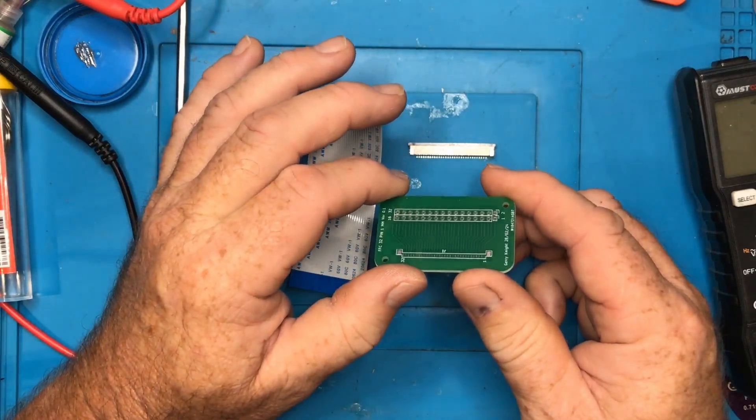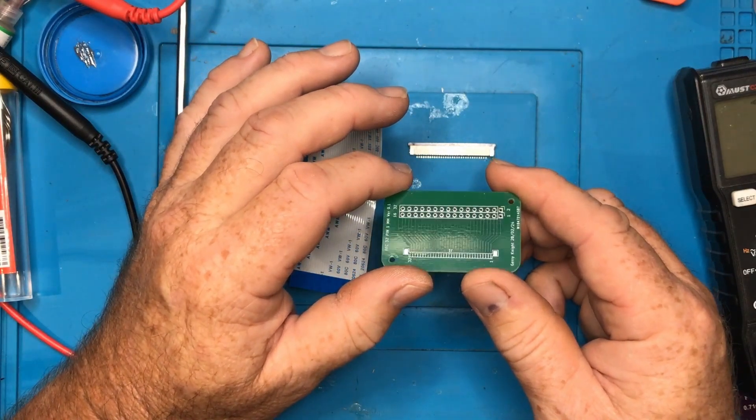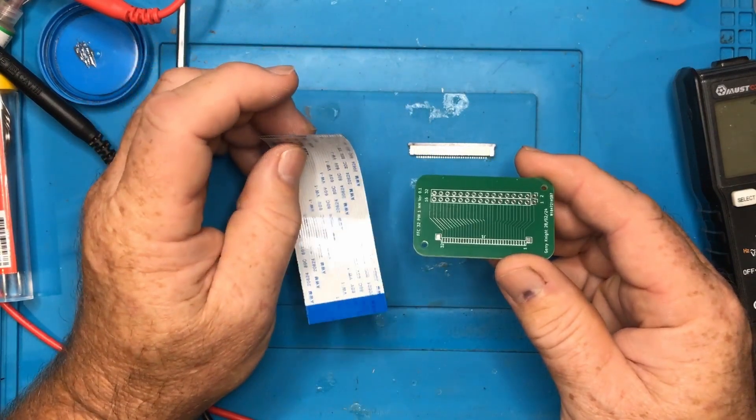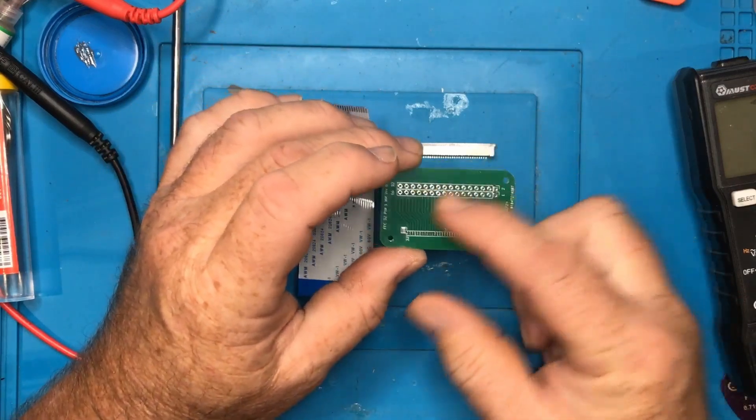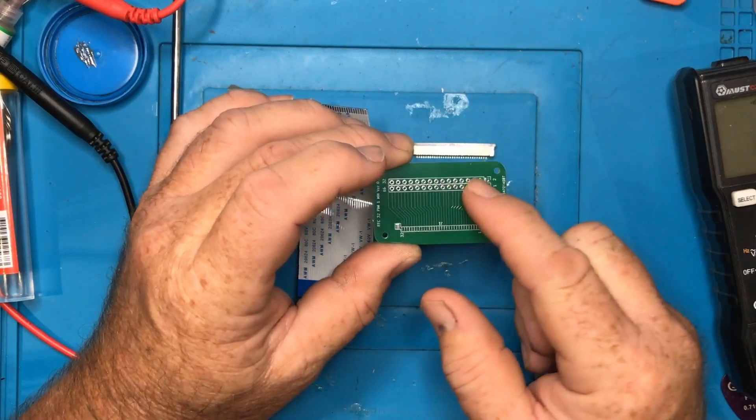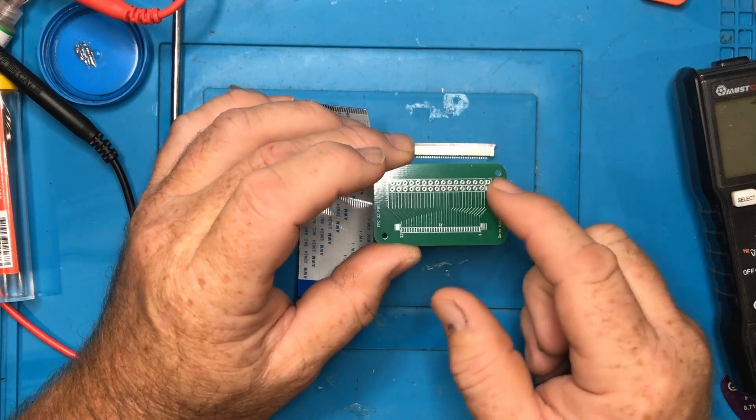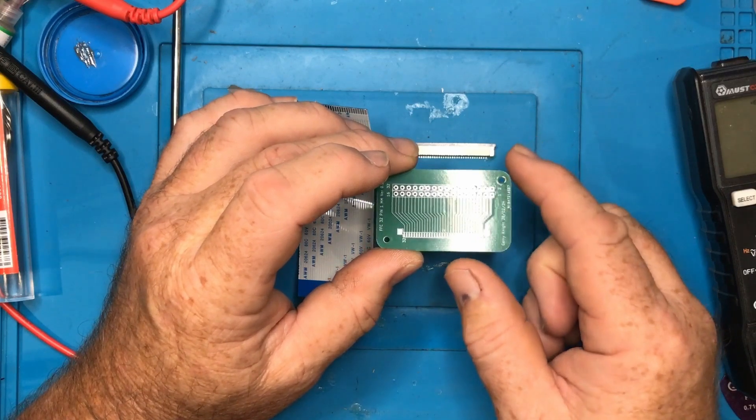This is a breakout board which takes a 32 pin ribbon cable and converts it into normal spacing for a protoboard or a breadboard.